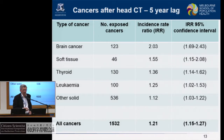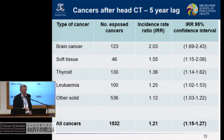The increase in risk for brain cancer is on average about two-fold, with confidence intervals from 1.69 to 2.43.